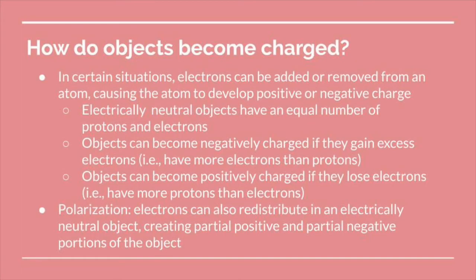What happens to a charged object? If two charged objects come into contact, they experience an electrostatic force. Electrostatic force is similar to gravity in that it is an at-a-distance force that can cause attraction. However, it's different from gravity in that electrostatic force can also cause repulsion. Two objects with like charges — for example, two negatively charged objects — will repel each other, pushing in opposite directions. The same is true for two positively charged objects.